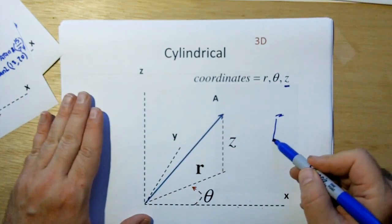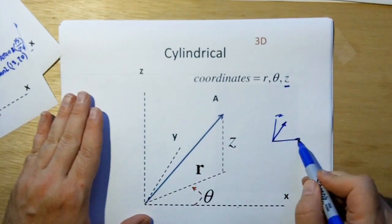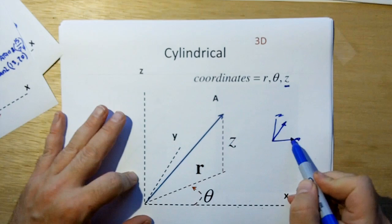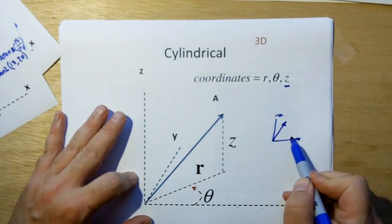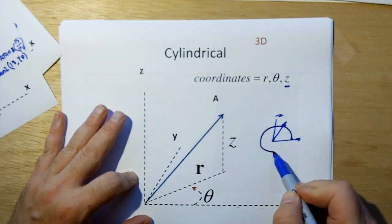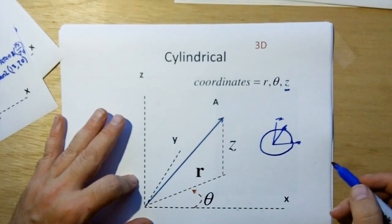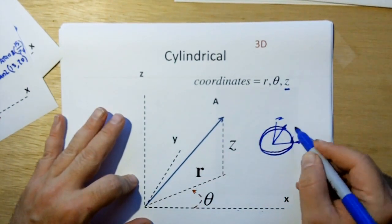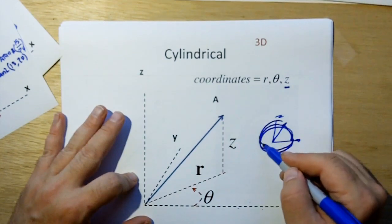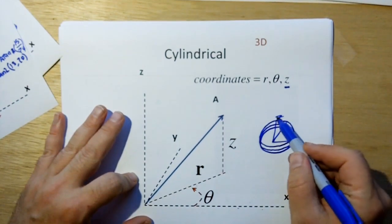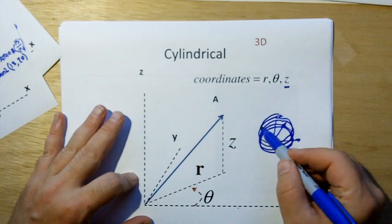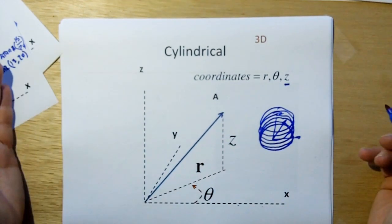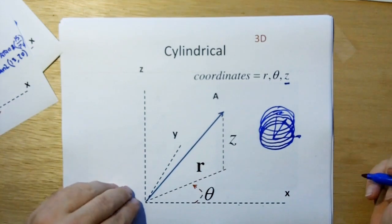Here's z, here's y, and here's x. If I keep z at zero and spin theta, I'm going to have a circle in the xy plane. If I increment z, I'll have another circle a little bit above that. Increment z again, another circle above that — and again, and again. We'll end up tracing out a cylinder. That's why these are called cylindrical coordinates.